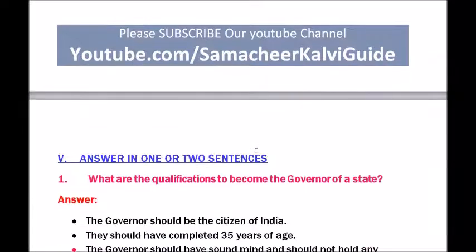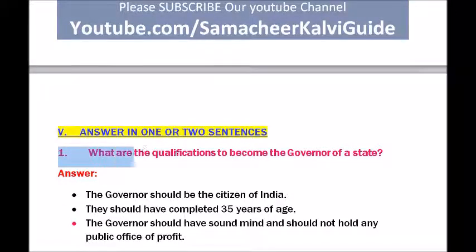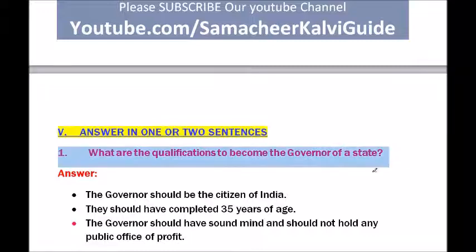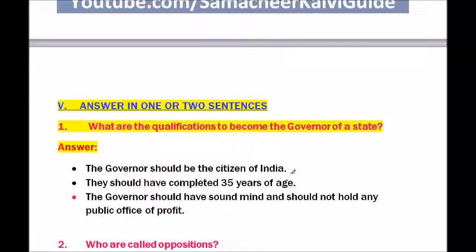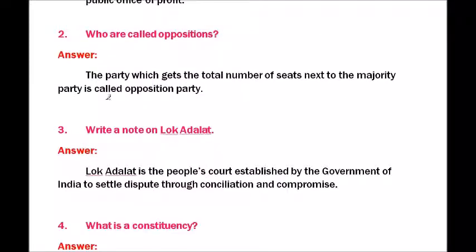Section five: Answer in one or two sentences. Question one — what are the qualifications to become the governor of a state? The governor should be a citizen of India, should have completed 35 years of age, should have a sound mind, and should not hold any public office of profit.